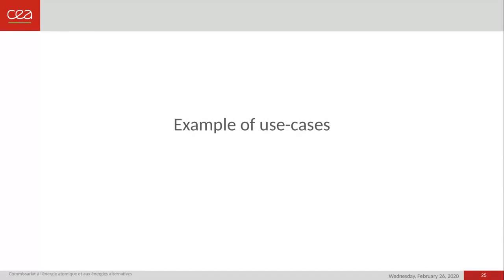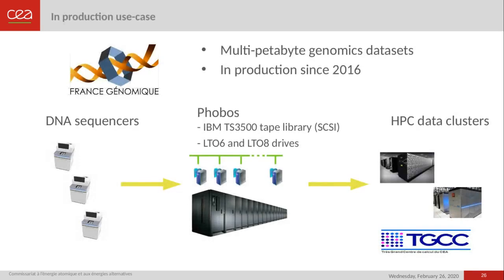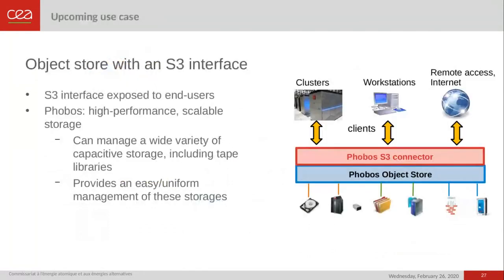To end the presentation, let me cover three use cases — the first is already in production and the next two are upcoming. We use Phobos in production at CEA since 2016 to save large genomics datasets produced by DNA sequencers before transferring them to our HPC data clusters. We also plan to use Phobos behind an S3 user interface, so Phobos can manage a wide variety of capacitive storage including tape libraries and provide easy, uniform management behind a front end to end users via an S3 server.